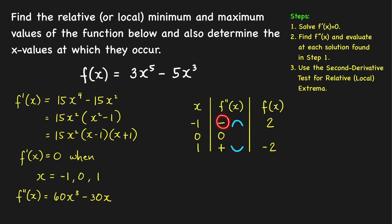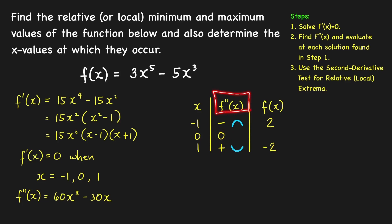When x equals negative 1, f double prime equals negative 60 plus 30, which is negative 30 — so it is negative. When we plug in x equals 1, we get 60 minus 30, which is a positive number. And when x equals 0, we get 0 minus 0, which equals 0. A negative second derivative means the graph is concave down at the critical number, and a positive second derivative means the graph is concave up. Therefore, we have a relative maximum at x equals negative 1 and a relative minimum at x equals 1.